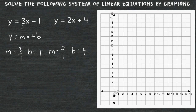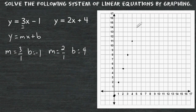So we rise up 1, 2, 3, and go over 1, and we continue to do that — going up 3 over 1 repeatedly to plot our points. Then you take a straight edge and connect those points together.